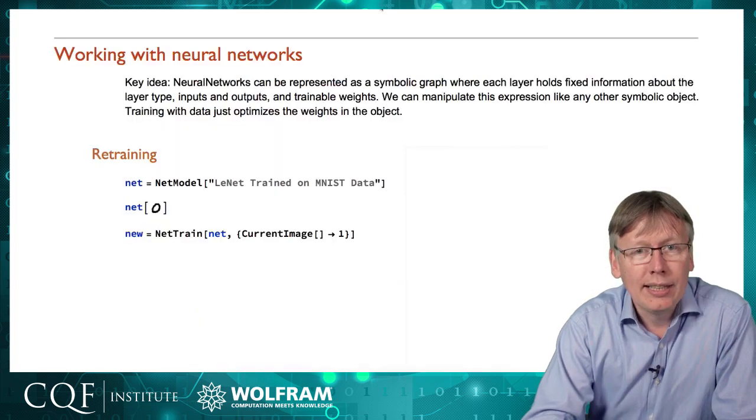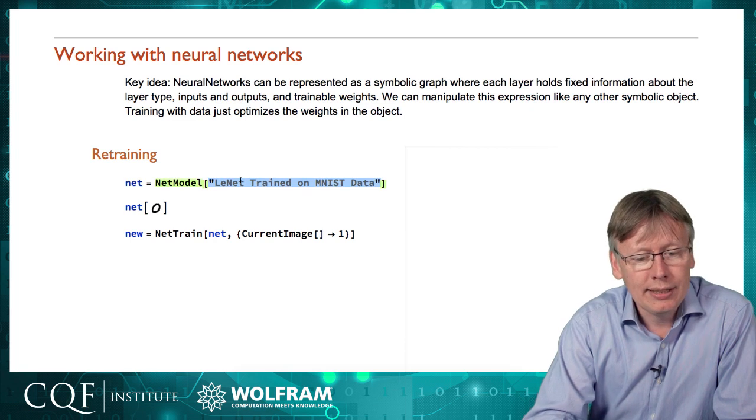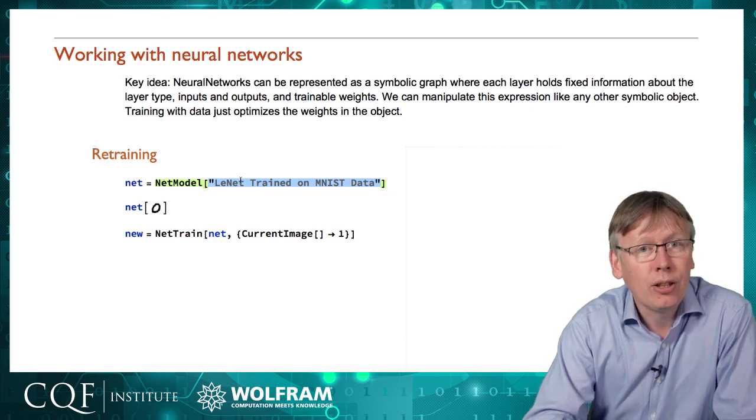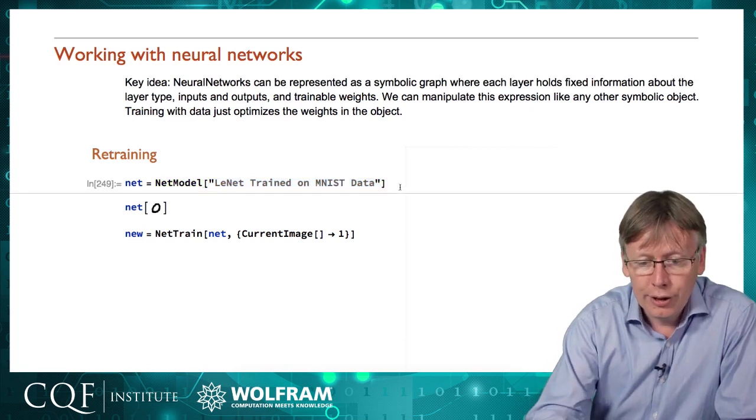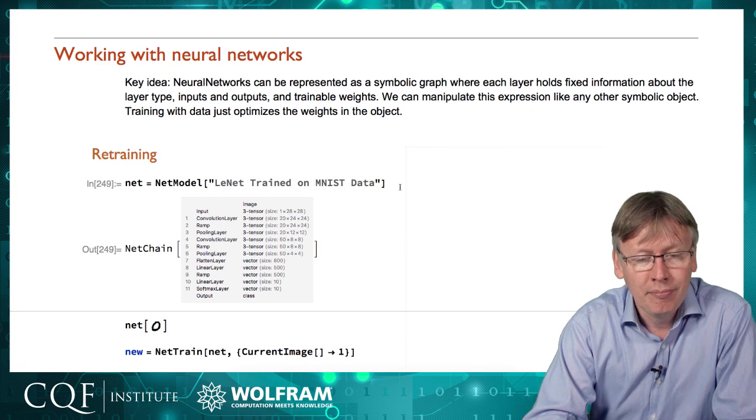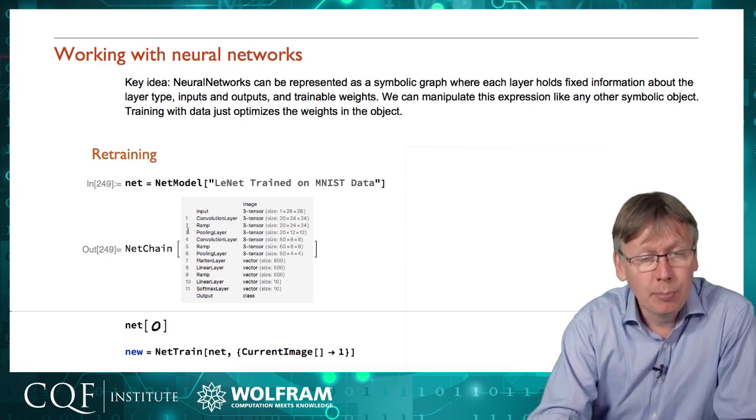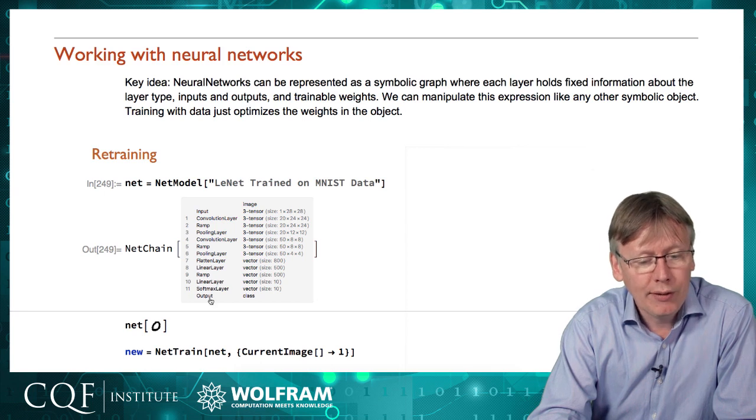Now one way of dealing with that is that we're providing a library of pre-built networks. So this net model command here allows me to download a network that is, in this case, the LUNET trained on MNIST data. So this is a neural network that is used for classifying handwritten digits and characters to try and predict what the digit is. And this is the symbolic description of that network. So it's got 11 layers. It starts with an input, ends with an output, and it goes through different layers along the way.